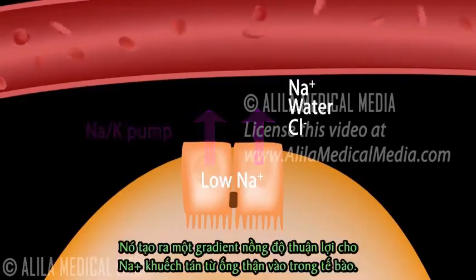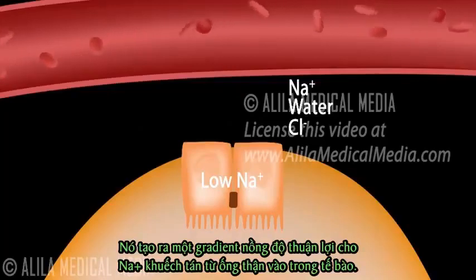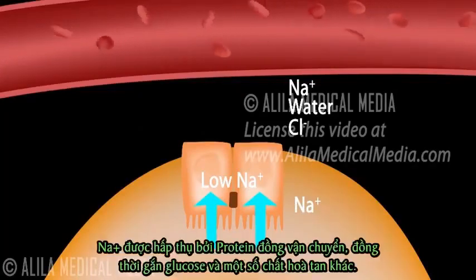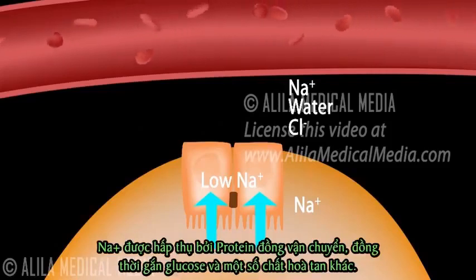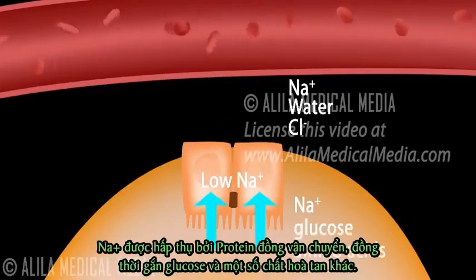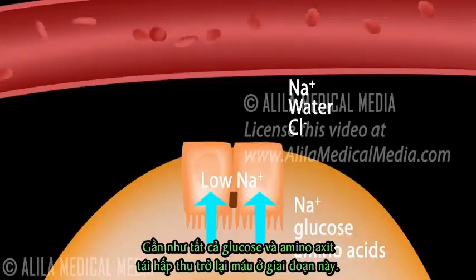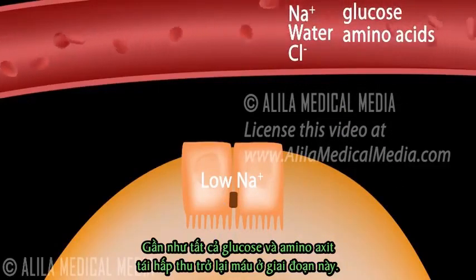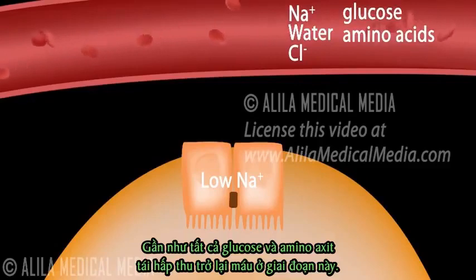This creates a concentration gradient that favors sodium diffusion from tubular fluid into the cells. Sodium is absorbed by transport proteins that also bind glucose and some other solutes. Nearly all glucose and amino acids are reabsorbed back to the blood at this stage.